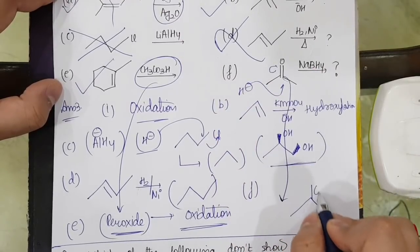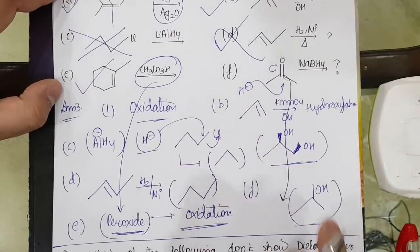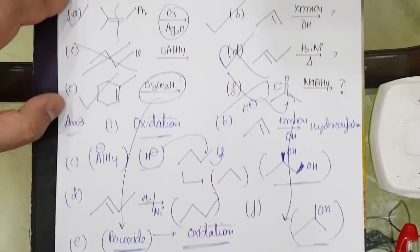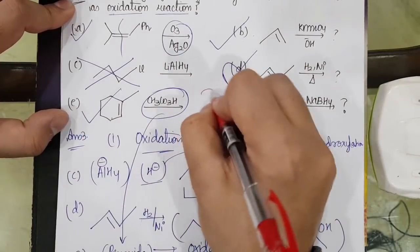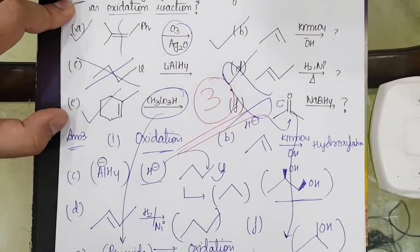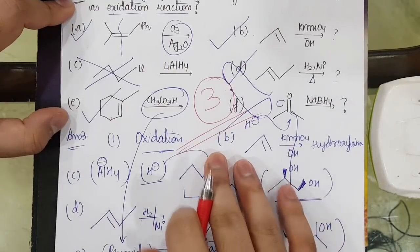NaBH4, what does it do? NaBH4, once again, like H minus will be provided, so that will do the reduction to give me the formation of an alcohol. So here reduction is happening. So this is also incorrect. So the correct answer will be A, B, E. So we will have 3 as the correct answer for this question. So 3 reactions basically give me the oxidation.